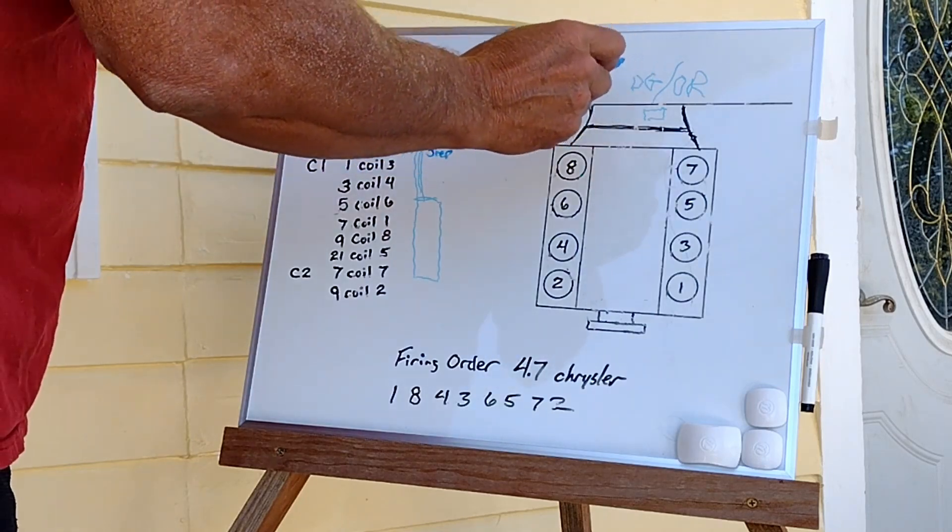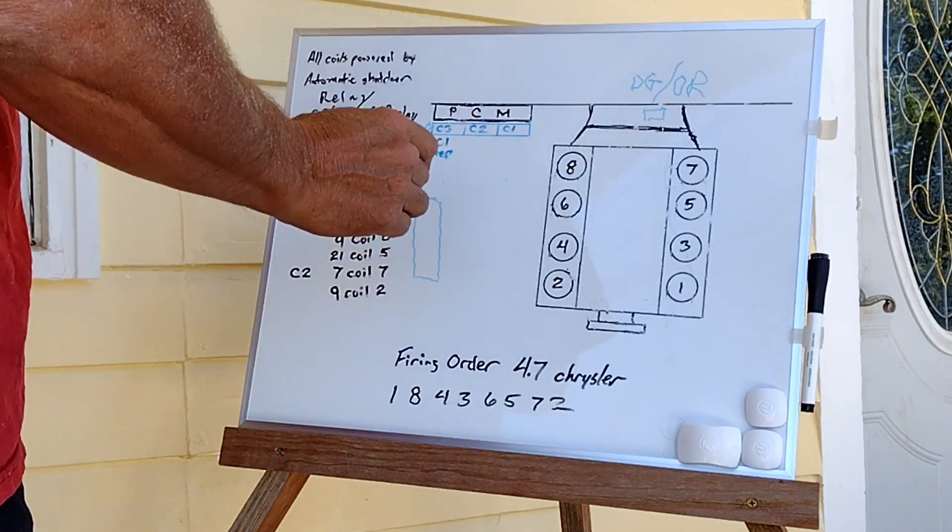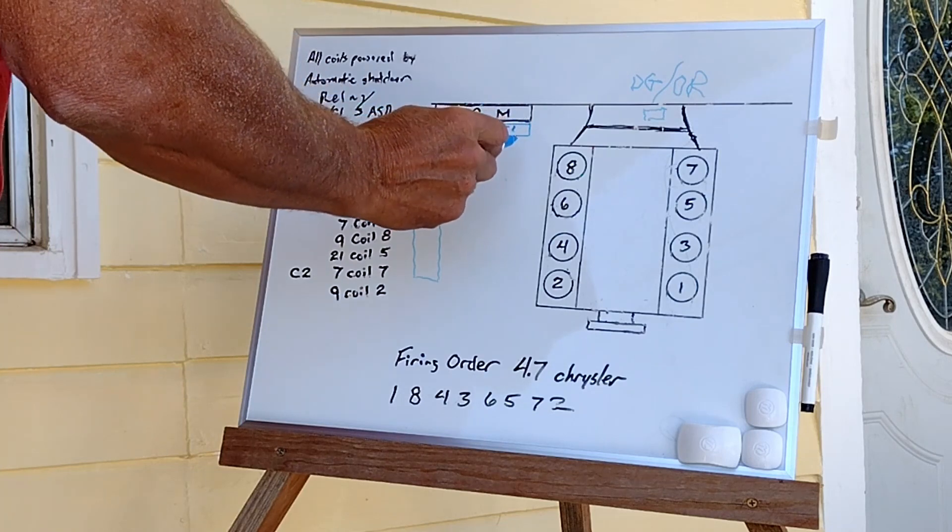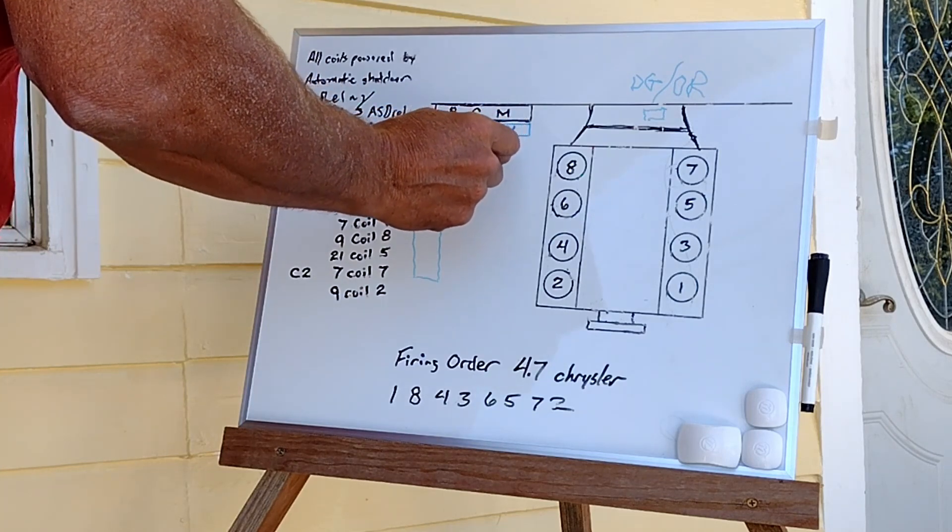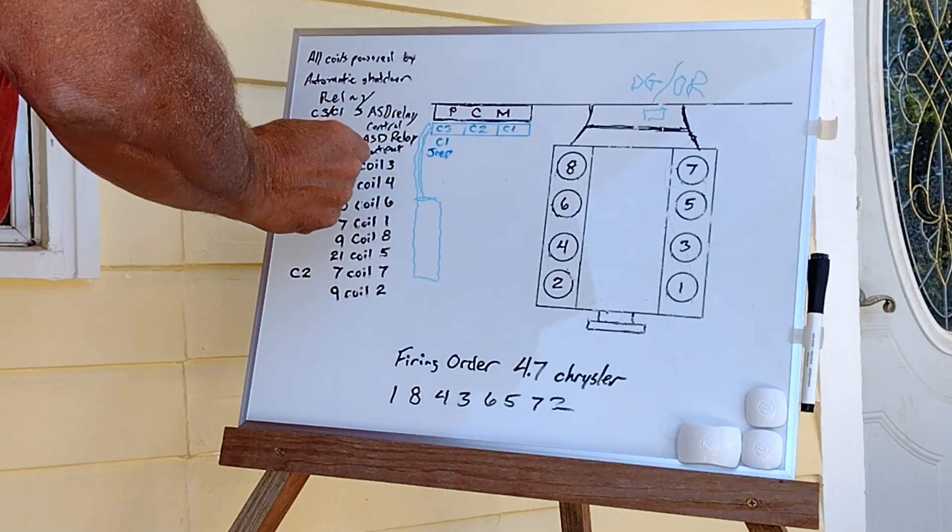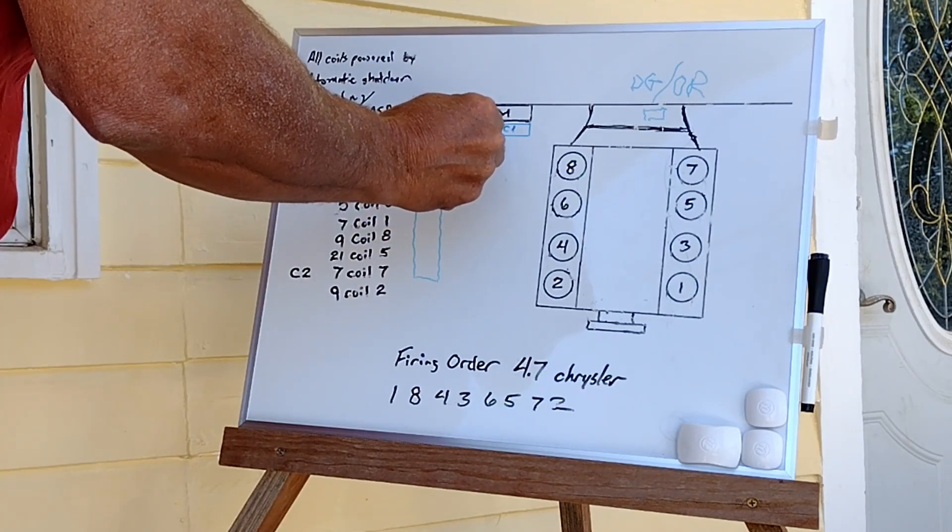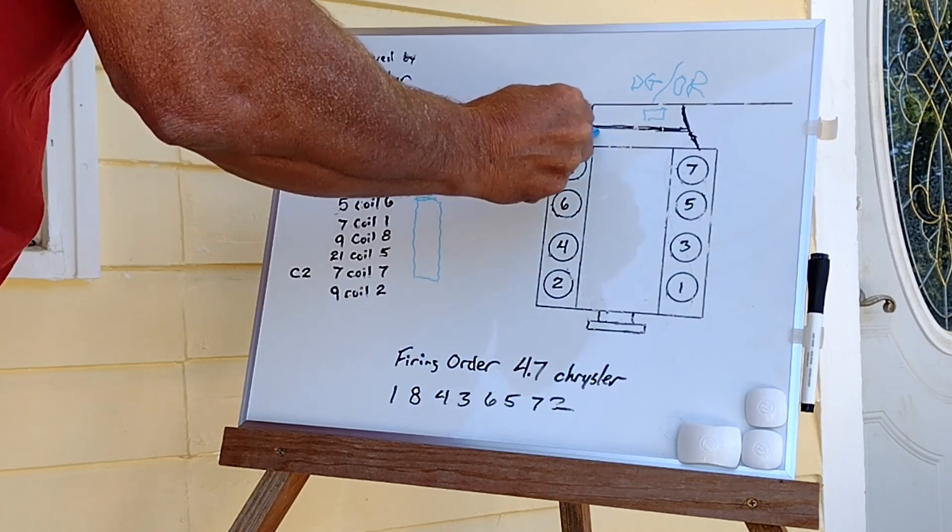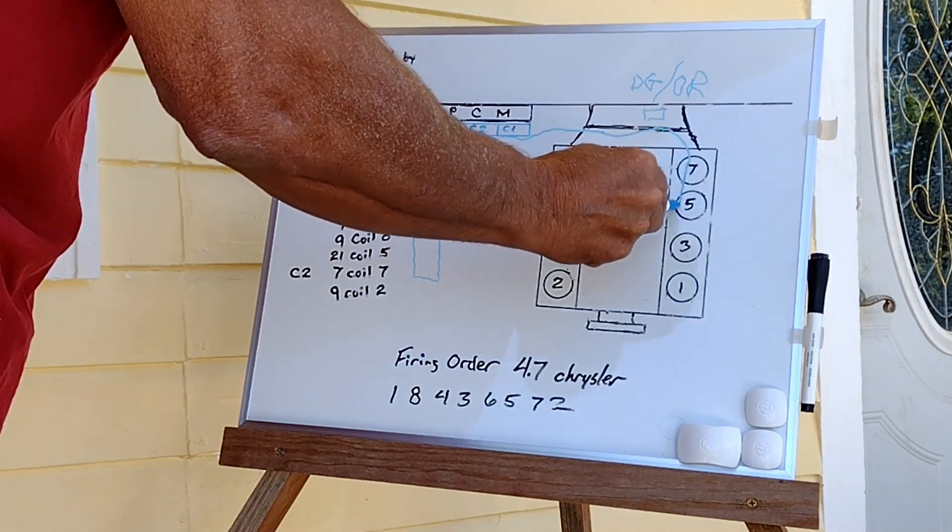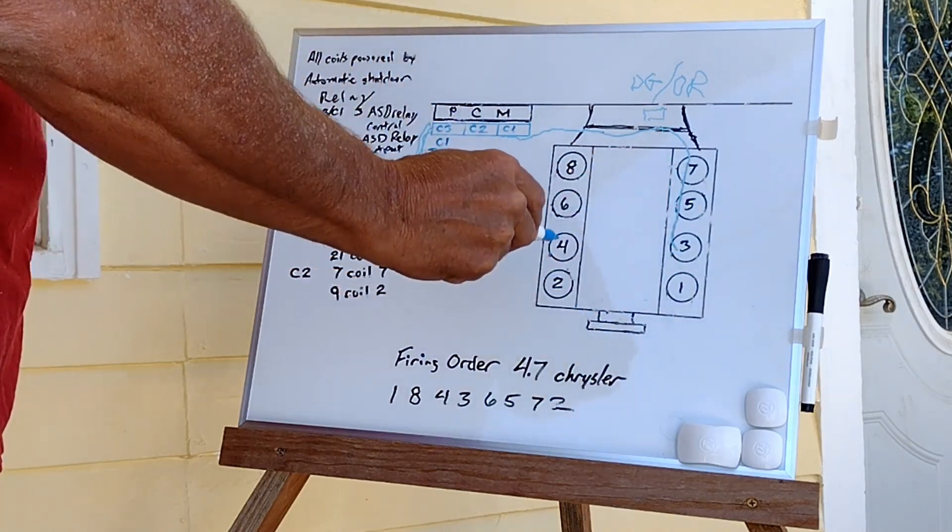Once you've got the PCM in place and the engine in place, you're going to start one at a time. You're going to come from the C, what Dodge calls the C1 plug, the number one wire, and you're going to take that across and over and route it down the engine to coil number three.